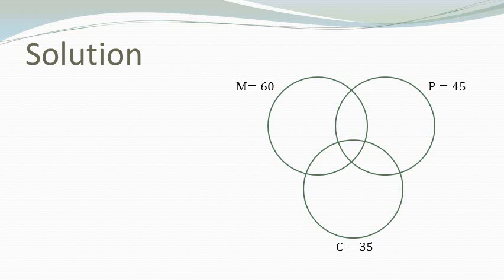The number of students common to both math and physics is 20. Common to physics and chemistry is 15, and common to math and chemistry is 25. So we get this.